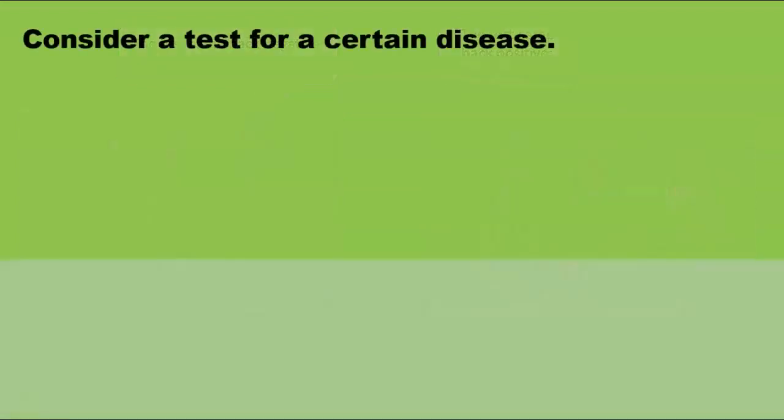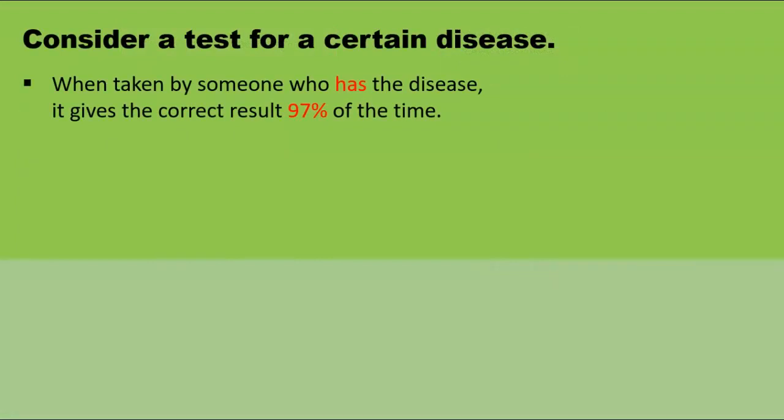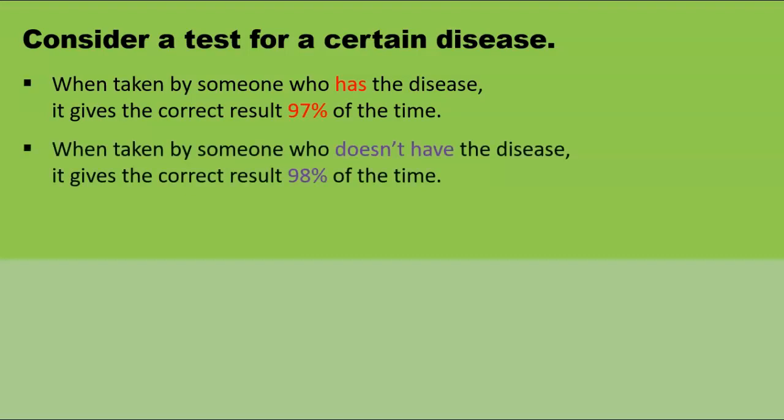Consider a test for a certain disease. When taken by someone who has the disease, it gives the correct result 97% of the time. When taken by someone who doesn't have the disease, it gives the correct result 98% of the time. So this looks like a very accurate test.